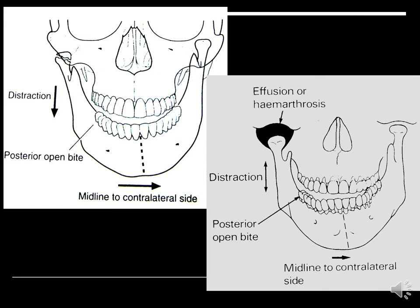Have a careful look at all these pictures because you tend to get questions from this area — it gives much scope for examination questions. In case of hemarthrosis or effusion, there is no fracture, so there won't be movement due to pain. There will be posterior open bite, but deviation of the mandible will be on the opposite side because it is already pushed to the opposite side.